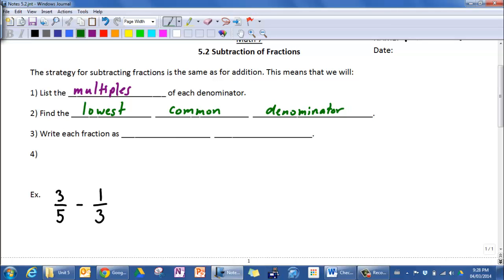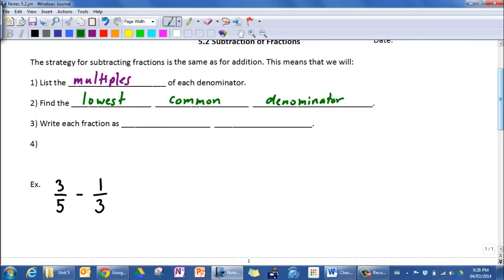Now remember that we can actually use any common denominator. It doesn't have to be the lowest, but the lowest one makes it the easiest for us moving forward. Once we have our lowest common denominator, we're going to rewrite each fraction as an equivalent fraction using that lowest common denominator.